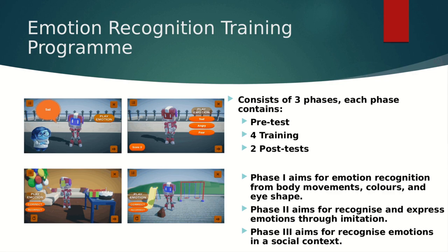Phase one aims for recognizing the basic six emotions: happy, sad, fear, angry, surprise, and disgust. In the pre-test, the virtual robot gives the child instructions. The purpose of the pre-test is to examine whether the child can recognize emotions produced by the robot through body movement, change of face color, and change of eye shape. The moderator presses a play button to instruct the robot to express one of the six emotions, one at a time in a randomized order, asking 'What is the name of this emotion?' The child chooses one of three options on a separate button on the screen. The robot provides real-time feedback, and a score counts the child's correct answers. The test is completed after all six emotions have been covered.